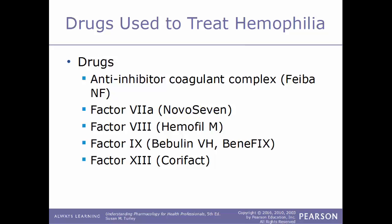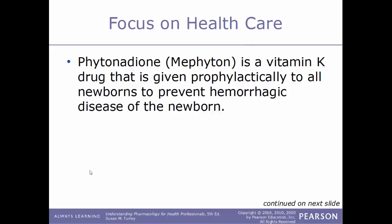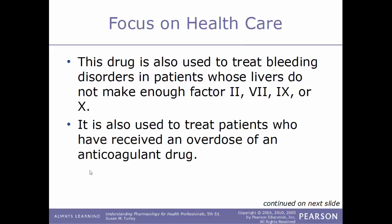Other drug forms of clotting factors include factor VIII, also known as Hemofil M; factor IX, also known as Bebulin VH or BeneFIX; and factor XIII, known as Corifact. These last four are drug forms of the actual clotting factors normally found in a person's blood. Patients with hemophilia can also be treated with blood transfusions or clotting factors derived from donated blood. The drug phytonadione, known by the trade name Mephyton, is a vitamin K drug given prophylactically to all newborns to prevent hemorrhagic disease of the newborn.